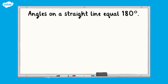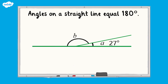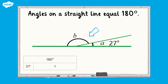We can use the fact that angles on a straight line equal 180 degrees to calculate the size of missing angles without needing to use a protractor. In these examples we are going to use a bar model to help us with our calculations. To calculate missing angle B, we need to subtract the known angle, angle A, from 180 degrees, which is the total of angles on a straight line.